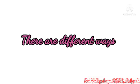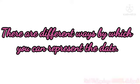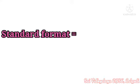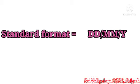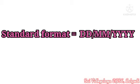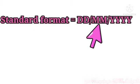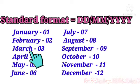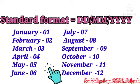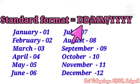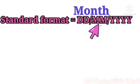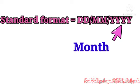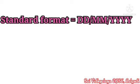There are different ways to represent a date, but the standard format is DD/MM/YYYY. Here each month corresponds to a particular number. For example, January is 01, February is 02, March is 03, April is 04, and so on. DD is the date, MM is the month, and YYYY is the year.